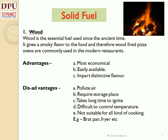Disadvantages of wood: First, while burning wood, it produces a lot of smoke which causes air pollution. Second, it requires a storage place — usually it is stored in sacks and needs space to store them properly. Third, wood takes a lot of time to ignite, sometimes needing other things like paper, cardboard or dry leaves to ignite. Fourth, it is a little difficult to control the temperature due to its intense heat. Fifth, wood is not suitable for all kinds of cooking, for example brat pan, deep fat fryer, etc.